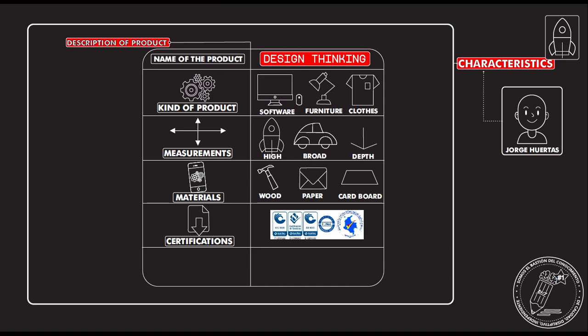Also, there are certifications that prove the product is healthy and is supervised by different kinds of institutions — those specifications will also be included. And it will also have precautions, which are very important because they tell you what not to do. For example, for clothes: don't wash in the washing machine, wash by hand. If something is very fragile, you need to understand that and be very cautious.